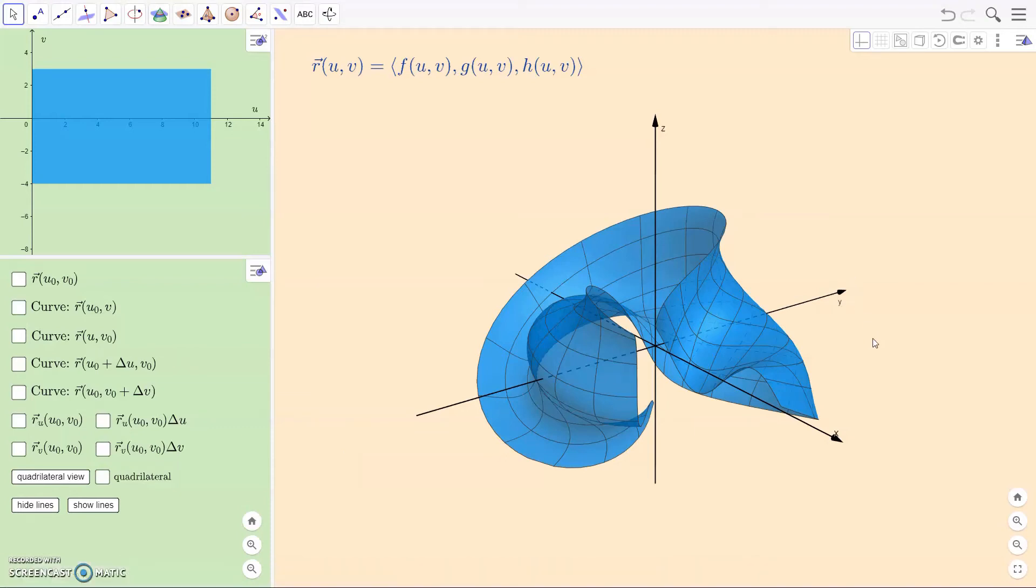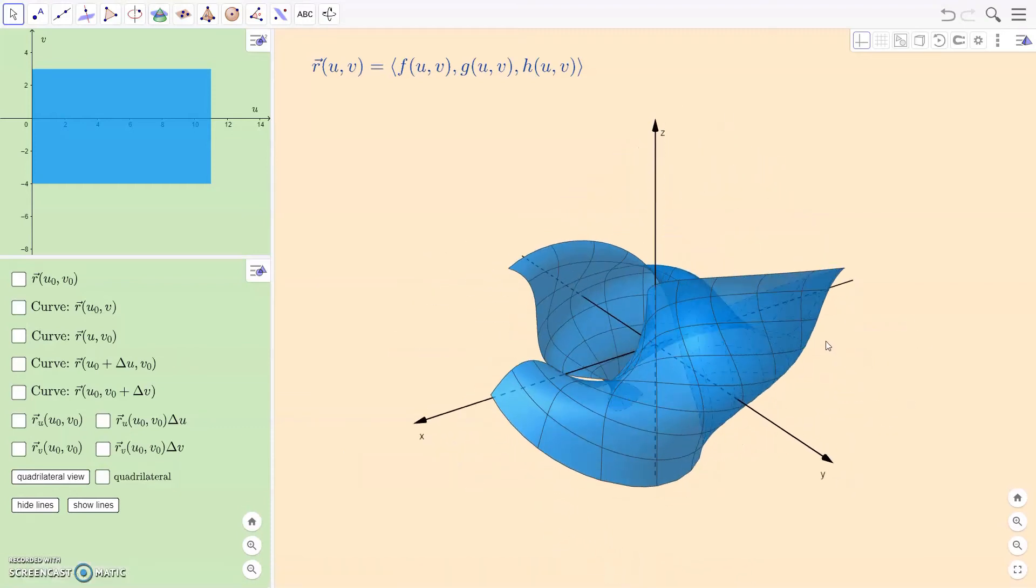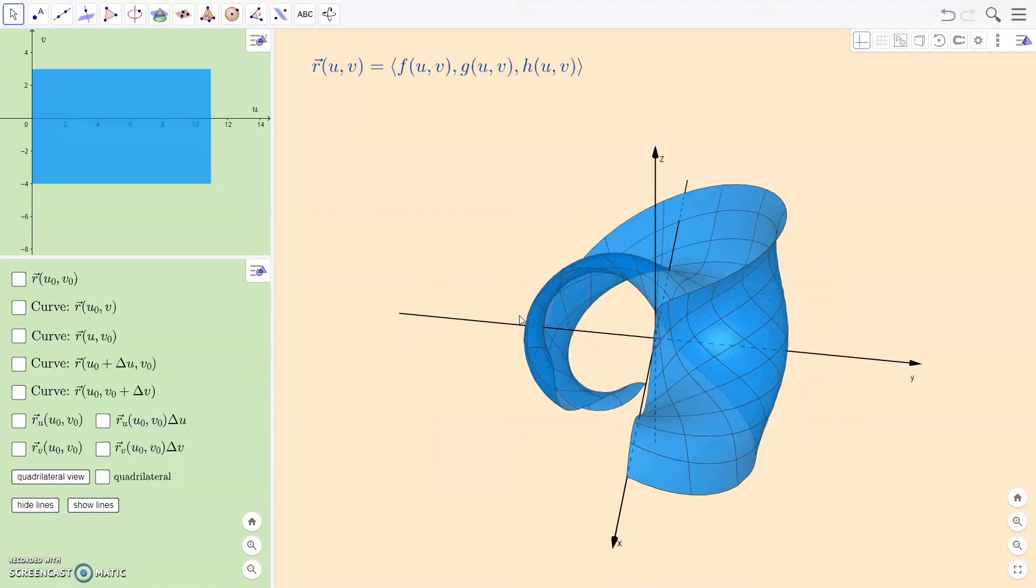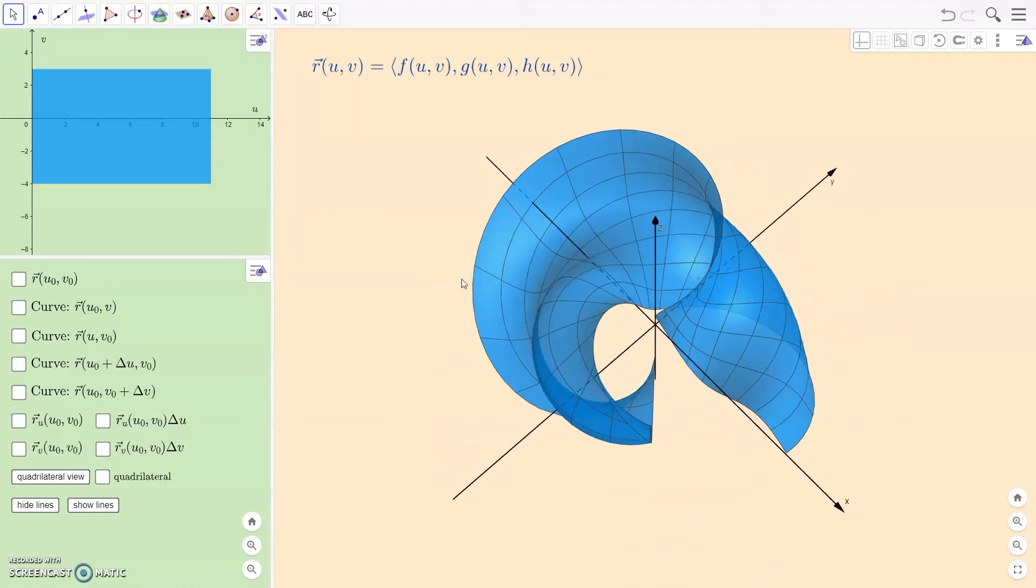I want to talk to you about how to find the area of a three-dimensional surface. Now, what is a surface, first of all? A surface is parameterized here by some function we'll call R, where we're going to plug in a U and a V, and out we get an X, a Y, and a Z.